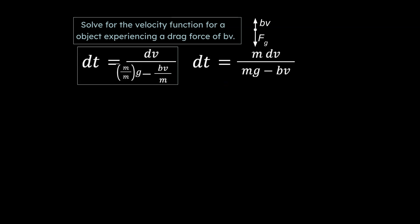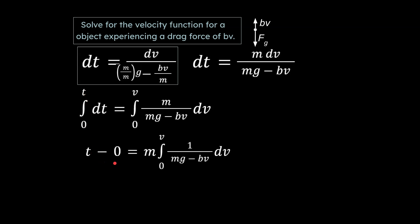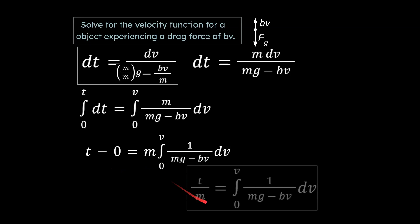Next we integrate both sides, following the laws of algebra while using calculus. We use bounds appropriate for each variable: the integral of dt evaluated from 0 to t just equals t minus 0, which is t. On the right-hand side there are more complex things to handle, so we take care of the easy side first. We can also bring the m to the left-hand side so we just have the integral on the right. That is where we're left with going into the next step.